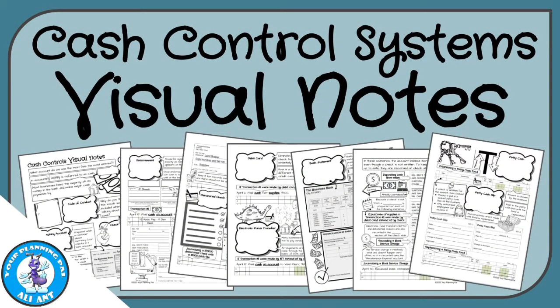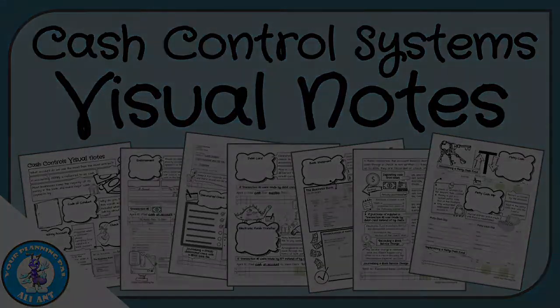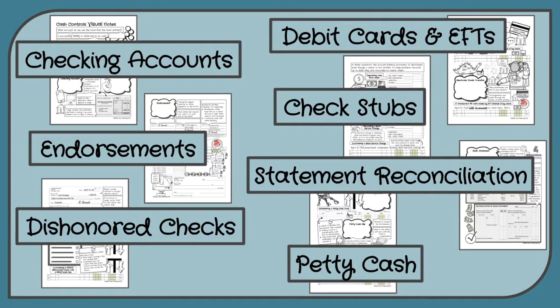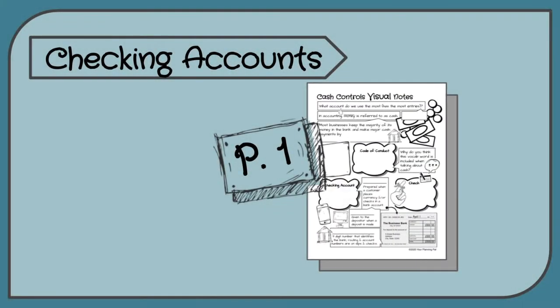This video is all about cash control systems and there are lots of topics. We're going to talk about checking accounts, endorsements, dishonored checks, debit cards and EFTs, check stubs, statement reconciliation, and petty cash. Let's start off with page number one and checking accounts.